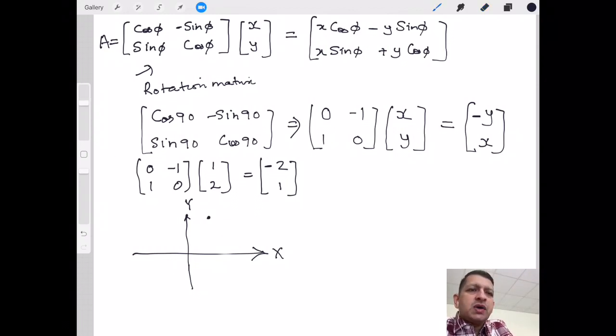Now I'm going to make this transform. This is like one unit and this is two units, so that's the point in question. Now when I multiply, this is going to become -2, 1. So where is -2, 1? Yes, here it is.